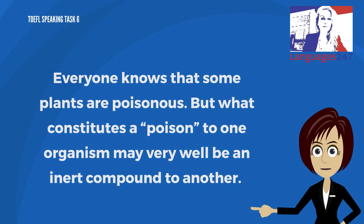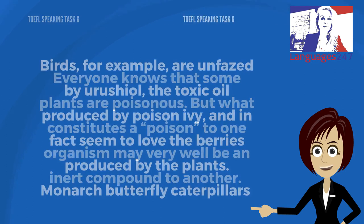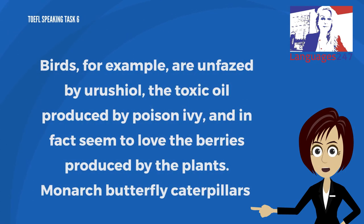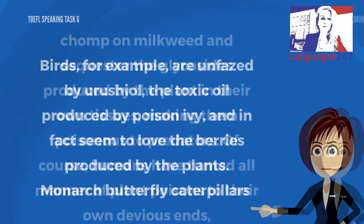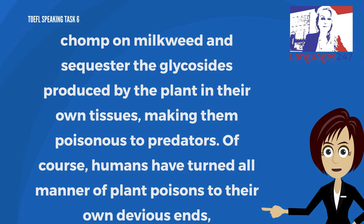Everyone knows that some plants are poisonous. But what constitutes a poison to one organism may very well be an inert compound to another. Birds, for example, are unfazed by urushiol, the toxic oil produced by poison ivy, and in fact seem to love the berries produced by the plants. Monarch butterfly caterpillars chomp on milkweed and sequester the glycosides produced by the plant in their own tissues, making them poisonous to predators.